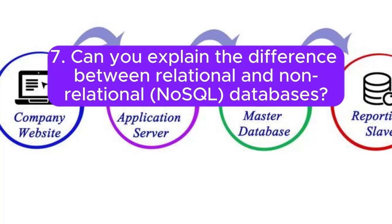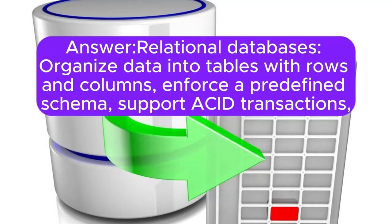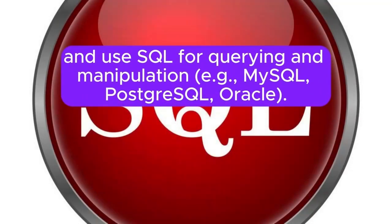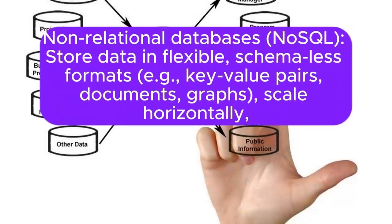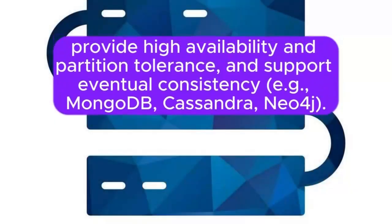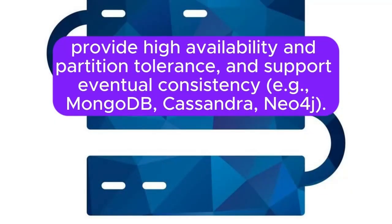Question 7: Can you explain the difference between relational and non-relational (NoSQL) databases? Relational databases organize data into tables with rows and columns, enforce a predefined schema, support ACID transactions, and use SQL for querying and manipulation — for example, MySQL, PostgreSQL, Oracle. Non-relational databases store data in flexible, schema-less formats such as key-value pairs, documents, or graphs; they scale horizontally, provide high availability and partition tolerance, and support eventual consistency — for example, MongoDB, Cassandra, Neo4j.